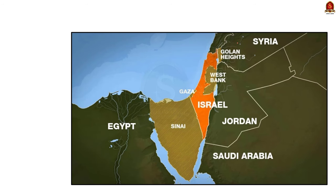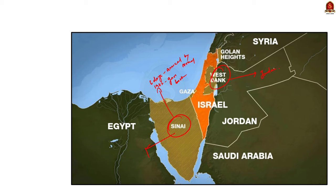Apart from Golan Heights, we also need to know about other areas important in this region. The Sinai Peninsula belongs to Egypt and was annexed by Israel during the Six Days War of 1967, but Israel returned this territory back to Egypt in 1982 as part of a peace treaty. The West Bank was originally a part of Jordan, bordered by the Dead Sea and Jordan on the east, and was originally designated as Palestine by the UN partition plan.